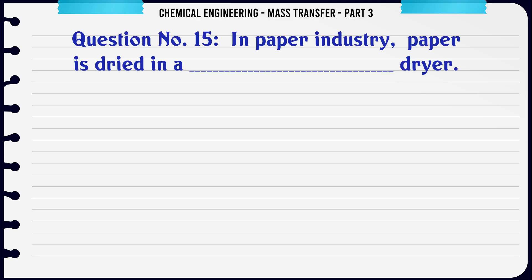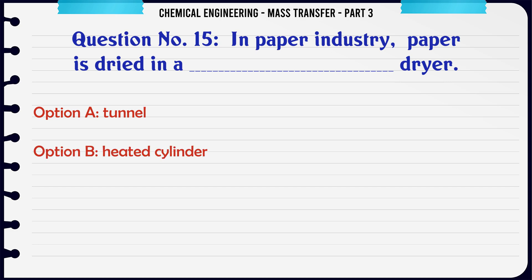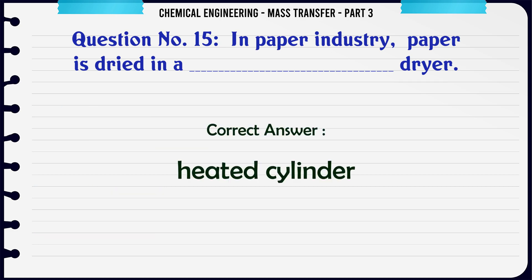In the paper industry, paper is dried in which type of dryer? A) tunnel, B) heated cylinder, C) conveyor, D) festoon. The correct answer is: heated cylinder.